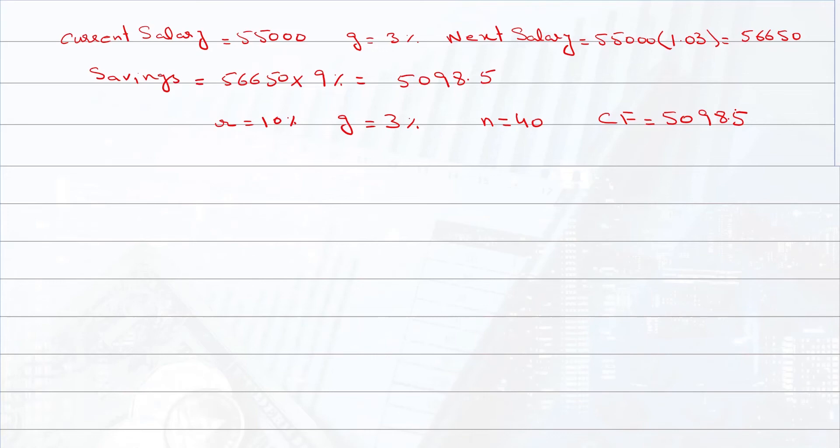We can use the present value of growing annuity to find the value of your deposits. The present value of growing annuity is equal to cash flow divided by (r minus g), into 1 minus [(1 plus g) divided by (1 plus r)] raised to power n.